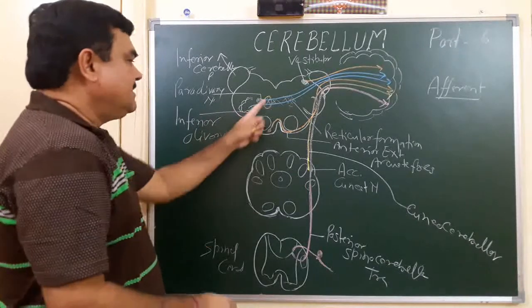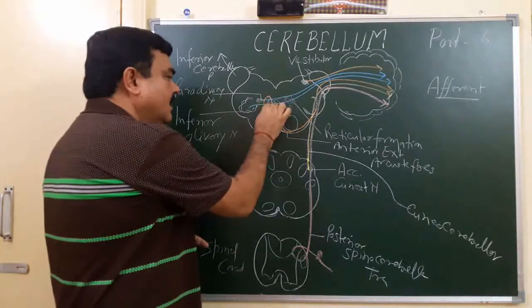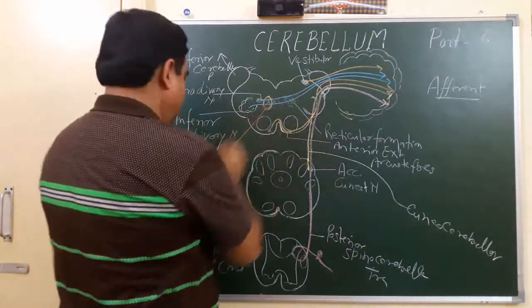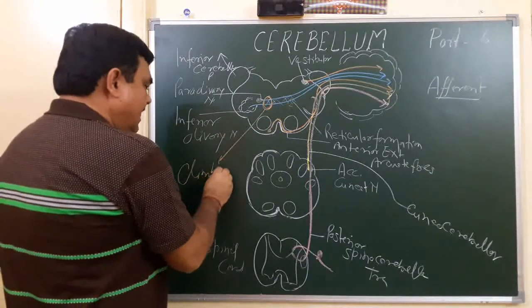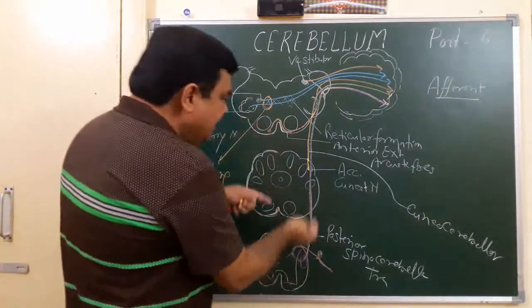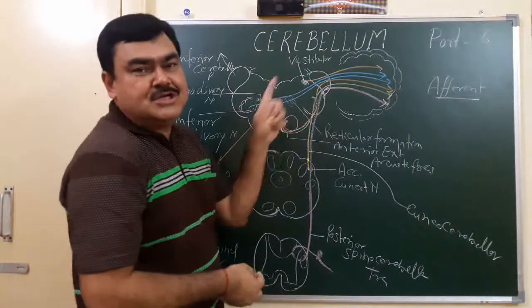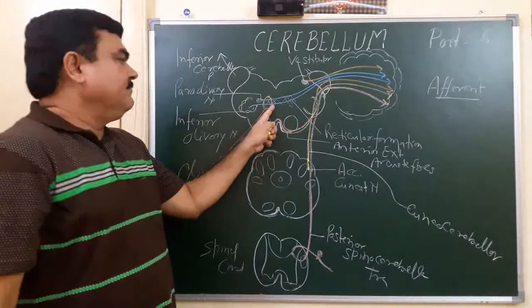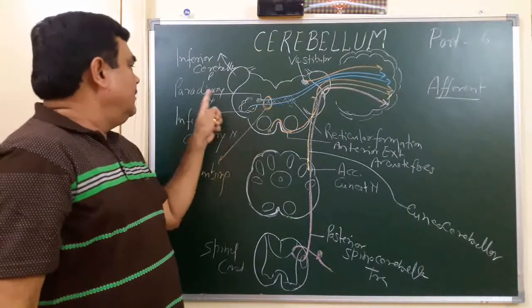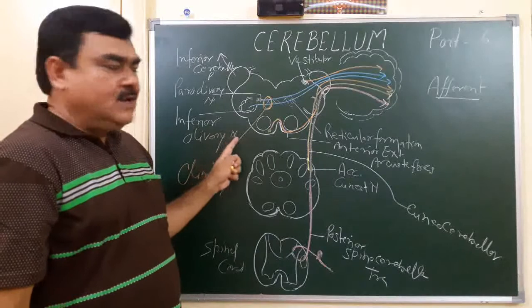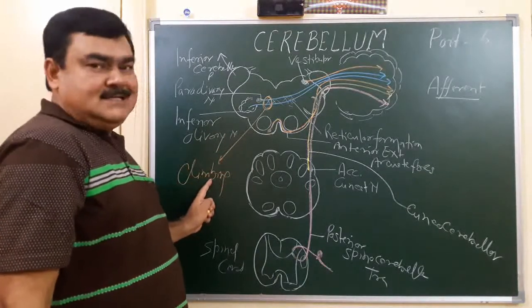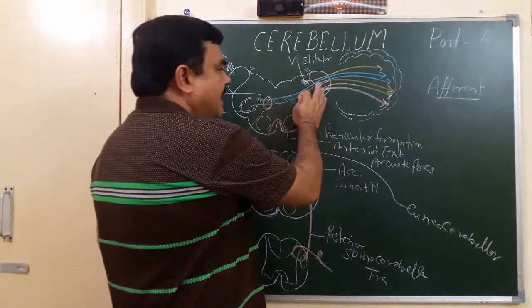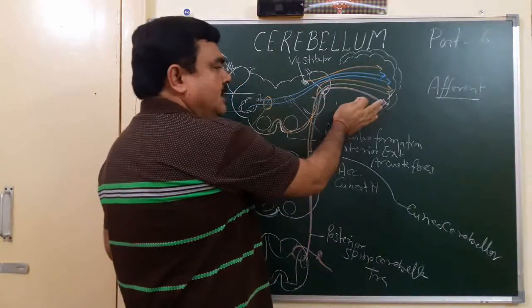These olivocerebral fibers are climbing fibers. These form the climbing fibers, and the rest of the fibers are the mossy fibers. Only the fibers arising from the paraolivary nucleus and inferior olivary nucleus are the climbing fibers; all other fibers are the mossy fibers.